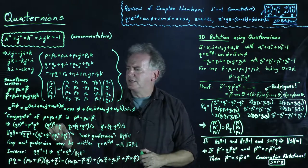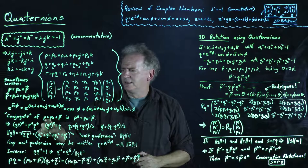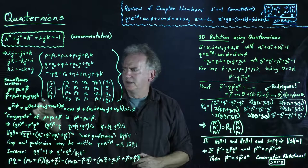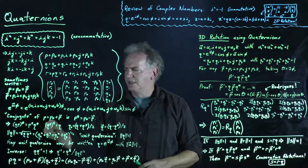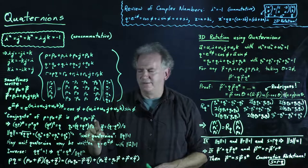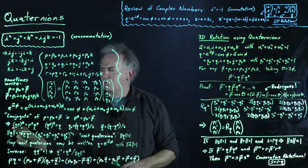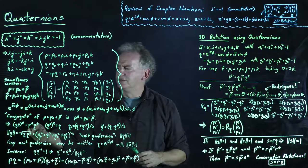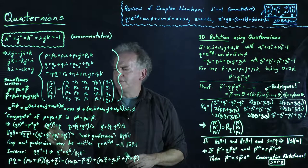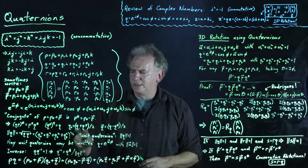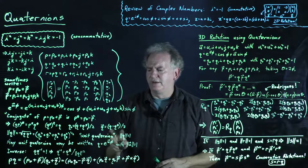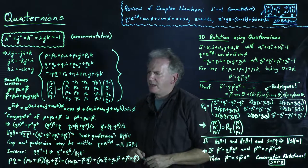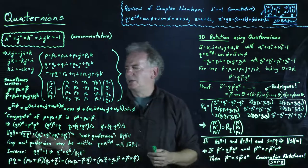We define the conjugate of a quaternion p — written as p* — as p* = p₀ − p⃗. The conjugate of a product equals the product of the conjugates. The conjugate of the conjugate is just the original. The real part q₀ = (q + q*)/2, and the vec part = (q − q*)/2. The norm of q is defined as the square root of q times q*, which gives √(q₀² + q₁² + q₂² + q₃²).